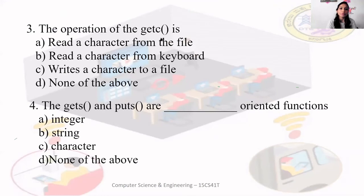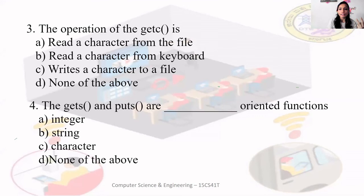What is the operation of getc? It reads a single character from a file — not from the keyboard. getc, gets, getw, and fscanf are all used to read from a file. The functions you learned last year — getchar, putchar, scanf, printf — are for standard input/output devices. The file versions are getc, putc, and so on.